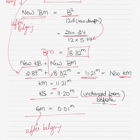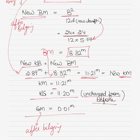The new GM after bilging is 0.01 meters. Although it is positive, the value is very low. No ship sails with such a low GM — after bilging, if the GM becomes so low, it's a matter of concern. But mathematically, we have calculated the new GM.